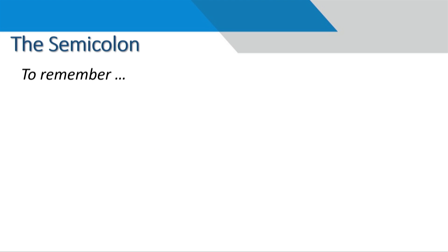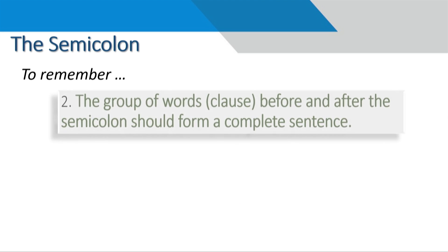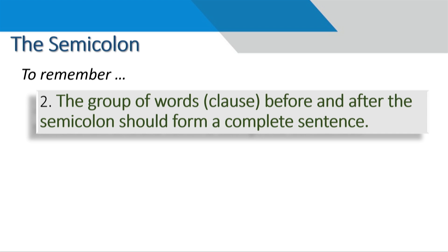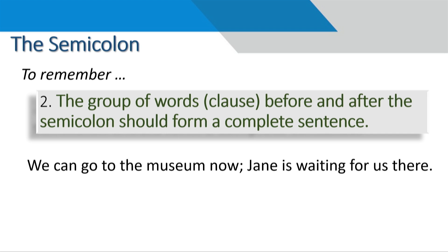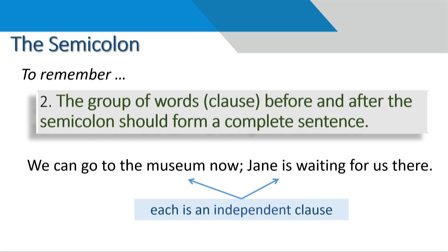The next point to remember: the group of words before and after the semi-colon should each form a complete sentence. For example: 'We can go to the museum now; Jane is waiting for us there.' Both groups of words on each side are complete sentences — that is, independent clauses.